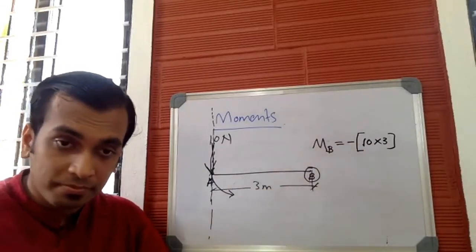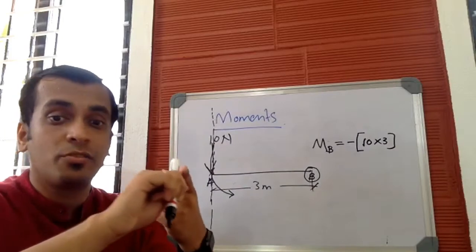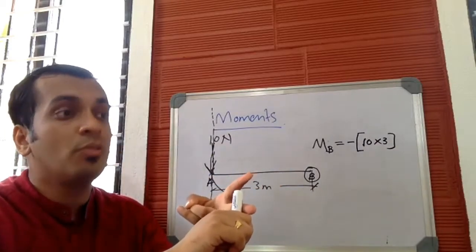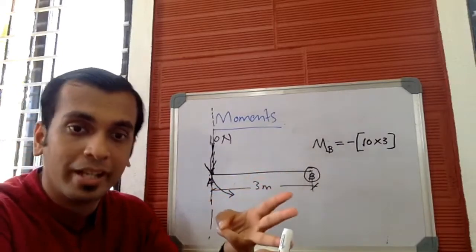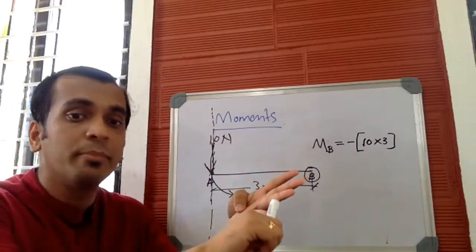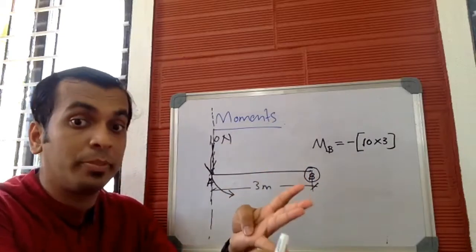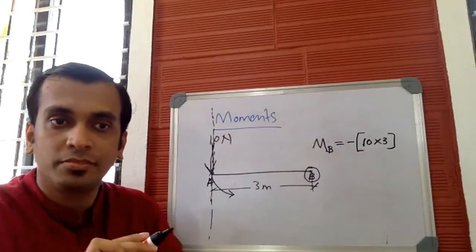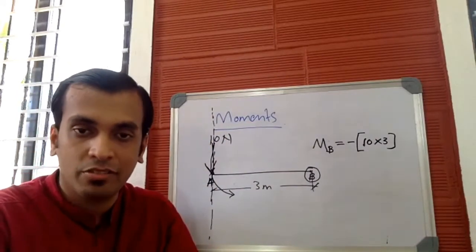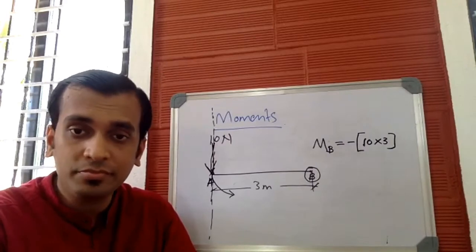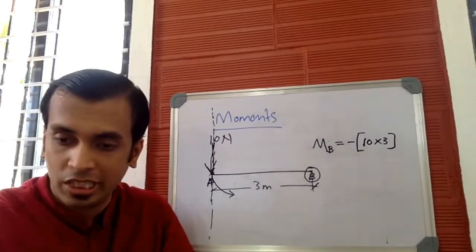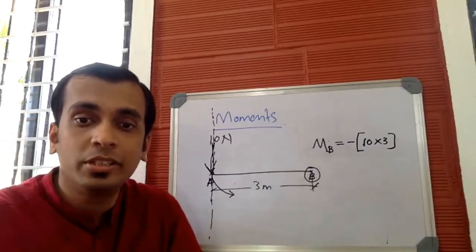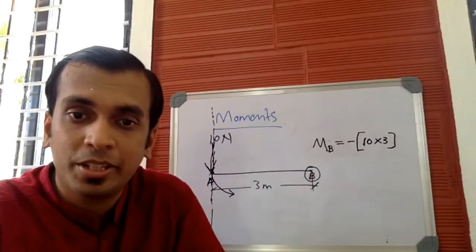We consider the direction of rotation of the body, not the direction of force. Moment is the product of magnitude of force and the perpendicular distance from the line of action of force to the point of rotation. This is how we calculate moment. We will go through numerical problems in the next video. Thank you.